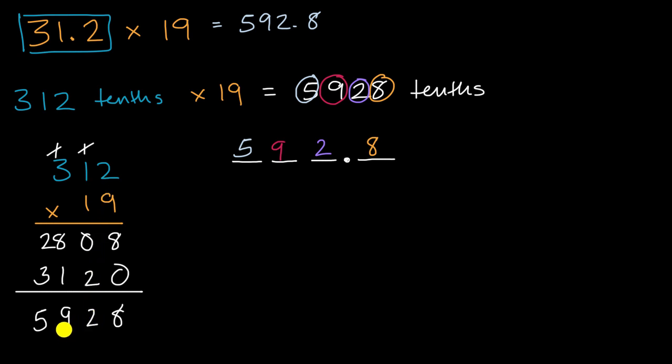...and say, okay, the answer should have the digits five, nine, two, eight in that order. Now where should I put the decimal in order for that to be a reasonable answer? And that's where estimation comes in. You could say, hey, 31.2 times 19, that's going to be approximately equal to, if I try to estimate these with numbers that are easy to multiply, that's going to be roughly equal to 30 times 20, which is equal to 600.